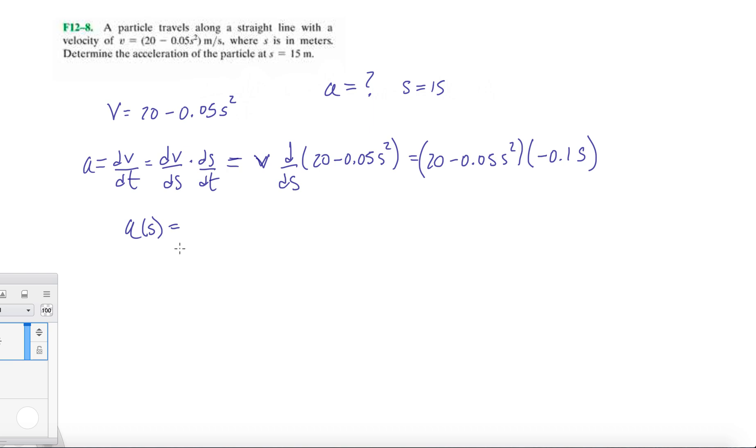So, instead of simplifying it, I'm just going to plug in and evaluate the acceleration at 15 meters. So, we have 20 minus 0.05 times 15 squared, times minus 0.1 times 15. And then, when we do this math out, we should end up getting, actually let's do it here.